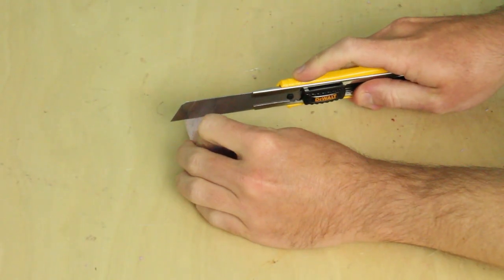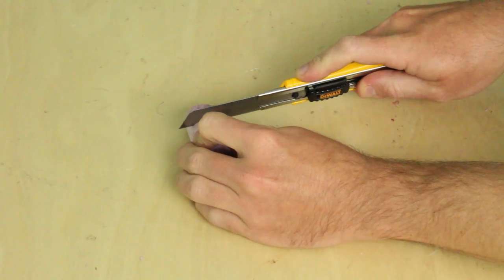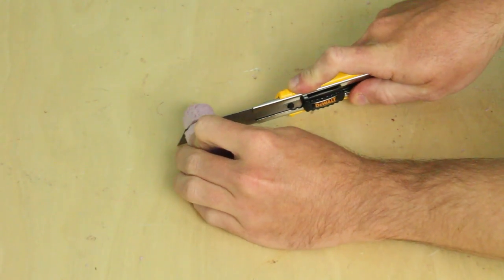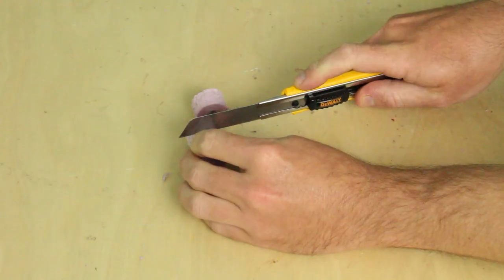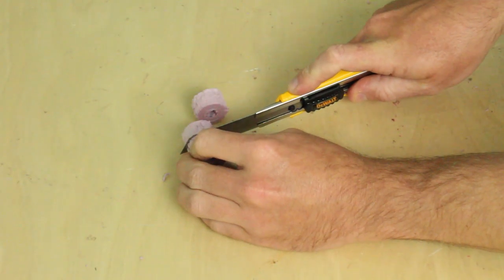Now I'm simply going to cut it approximately half inch tall. Somewhere between a half inch and three quarters of an inch is just fine. This doesn't have to be very precise. We'll worry about precision later.